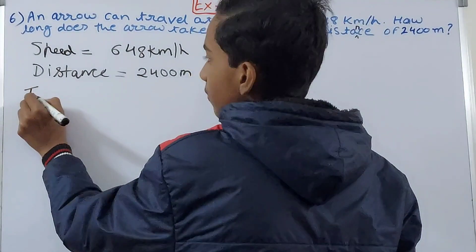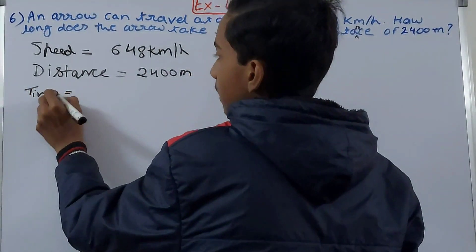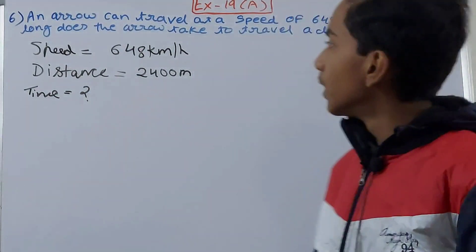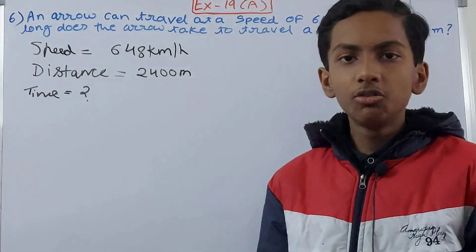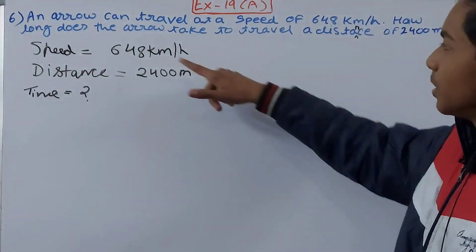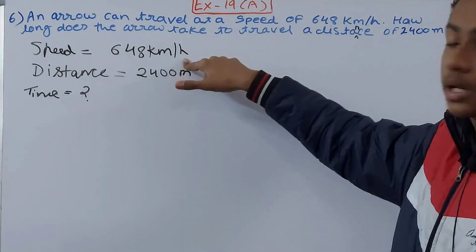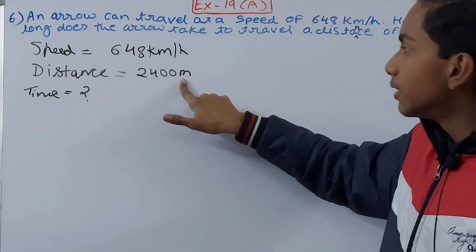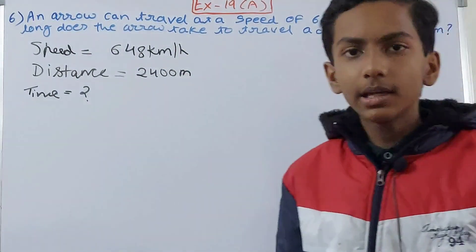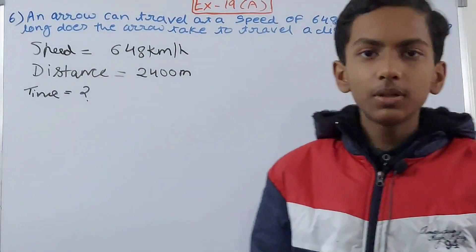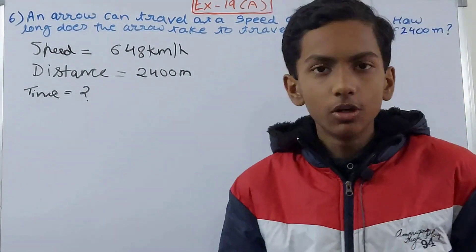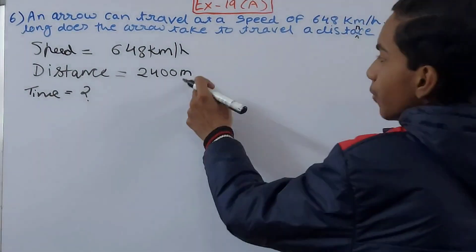Now first of all you need to look at the units. See this unit here, kilometer per hour - it is having kilometer and hour, and the distance is in meters. So that cannot work. Either both of them should be in meters or both of them should be in kilometers. So I feel it is more convenient to go from meters to kilometers here.